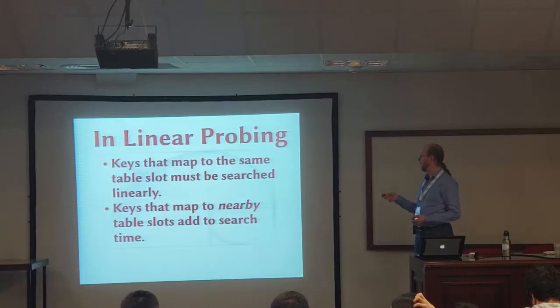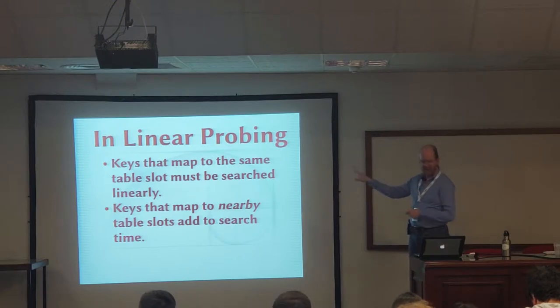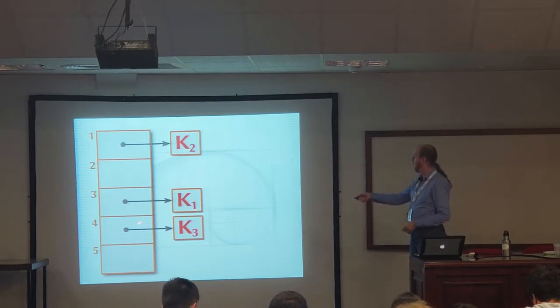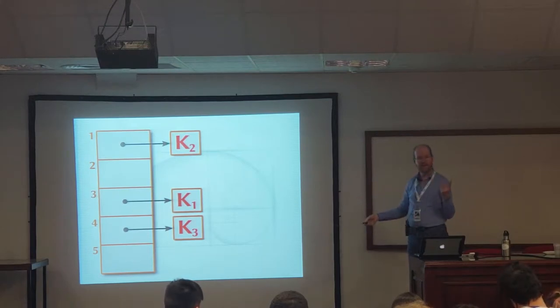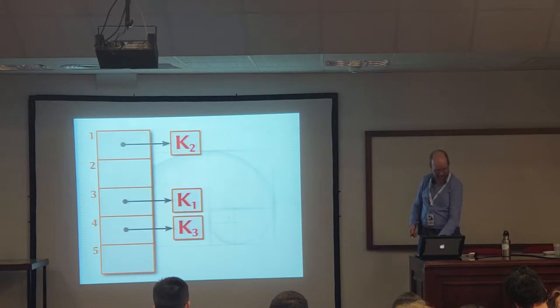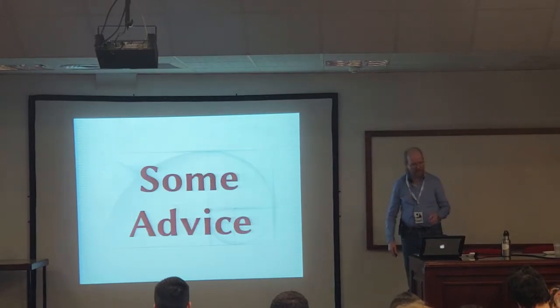In addition, in linear probing, besides linear search, keys that map to nearby table slots can add to the search time. If I had a collision here and added a couple here, even though the collision is here, the fact that these things are full means that the second thing that maps to index 2 is going to have to be put all the way down in 5. I only have two things that map to 2, but one of them I have to search all the way down to here to find.